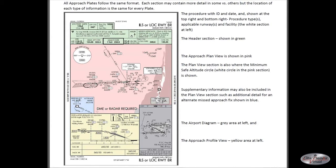You'll also see little inserts giving you extra information in the plan view — for example, an alternate missed approach. The gray area shows an overall layout of the airport with all the runways shown with their length and width, symbols for lighting, and symbols for obstruction. At the bottom is a table to help you determine your time to the final approach fix based on your ground speed.